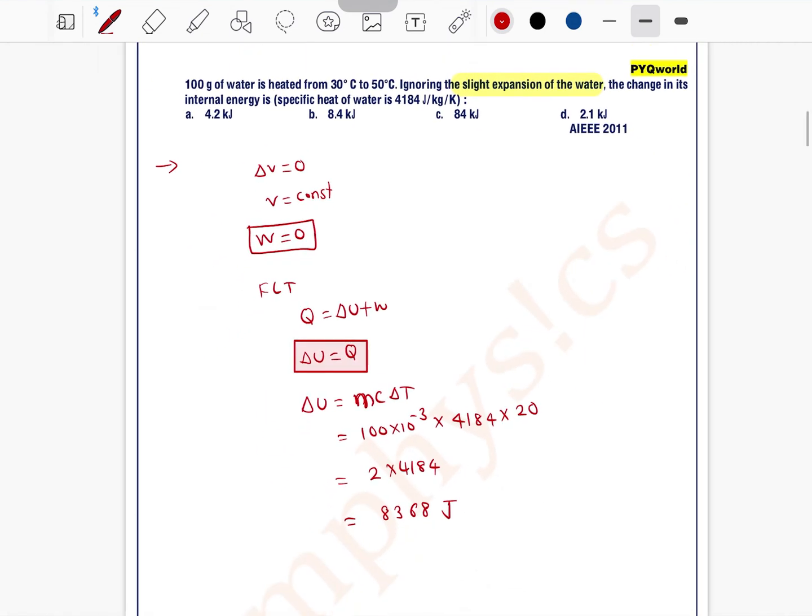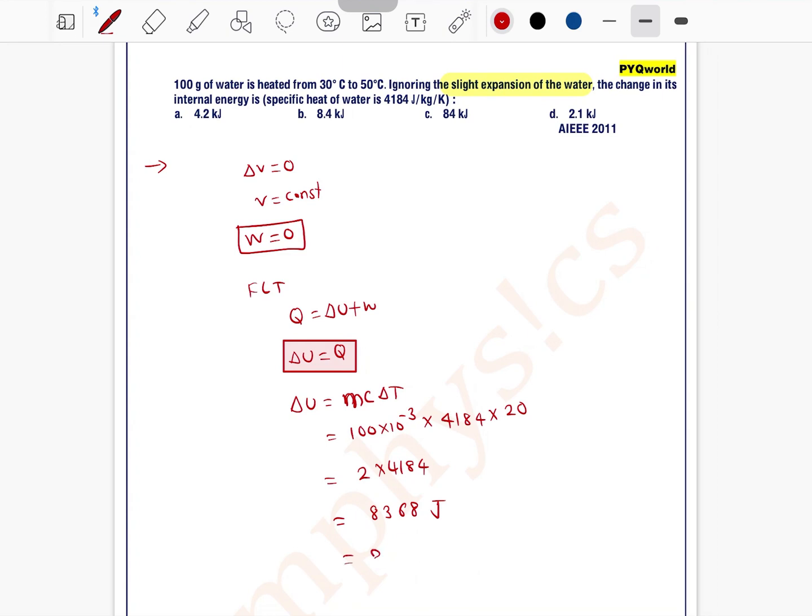This means you can write approximately 8.4 kilojoules, so option B is the correct one.